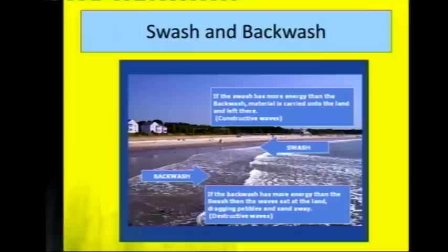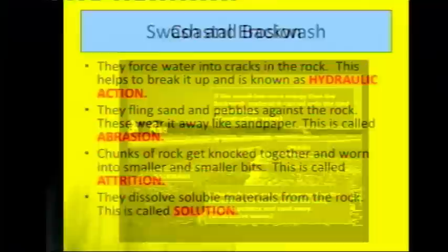When the waves move up towards the coastline this is called the swash, and when they move back down into the sea that's called the backwash. If a wave has got more swash than backwash it's a constructive wave, which means it's building up the beach and depositing material. However, if it's got more backwash than swash, it's a destructive wave that will take material away through erosion.